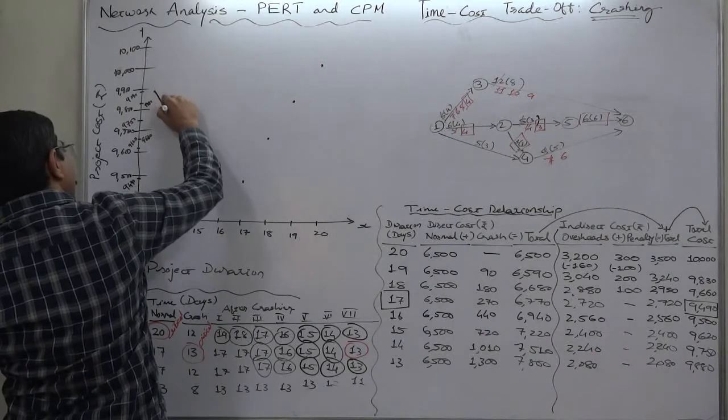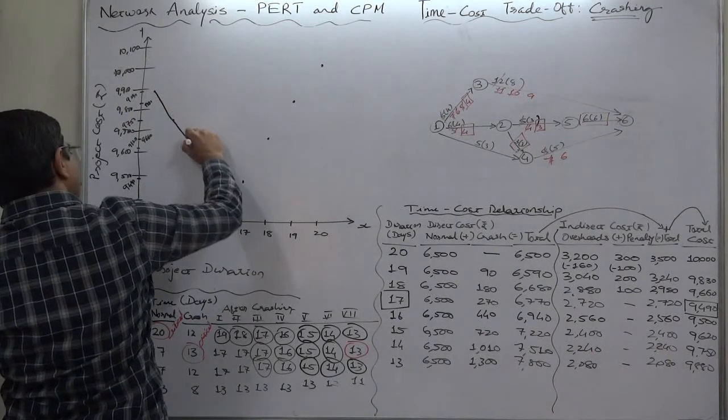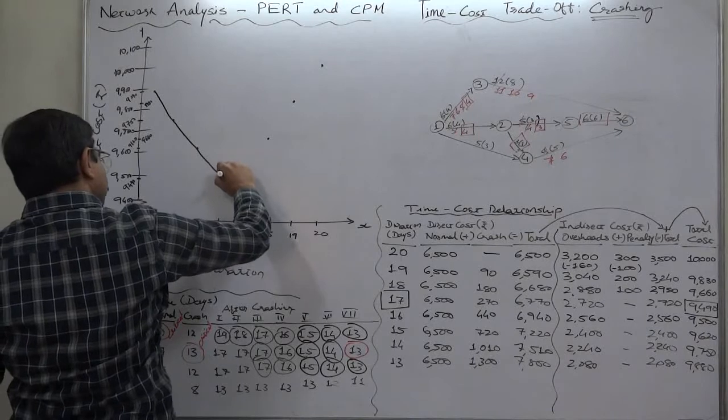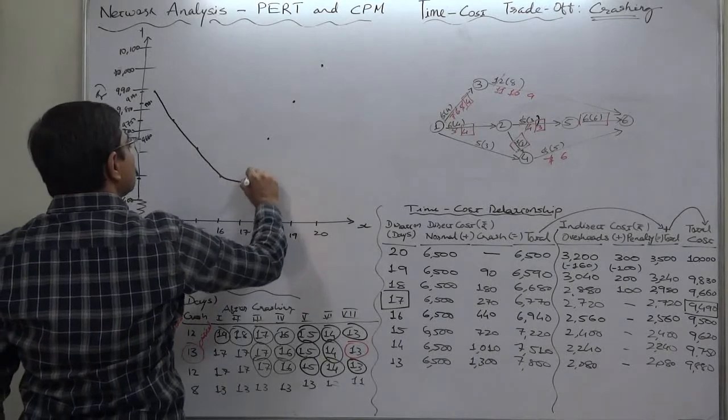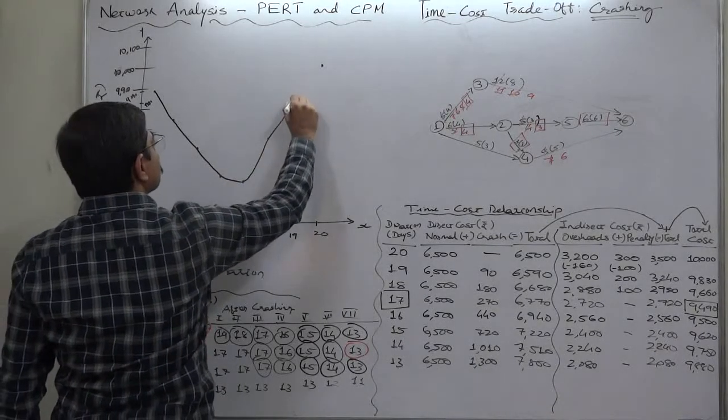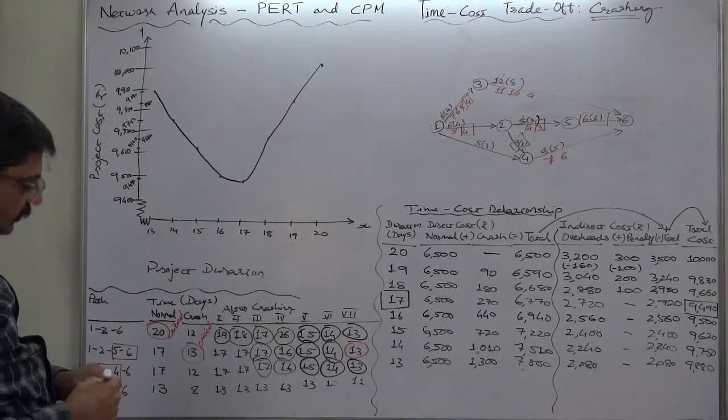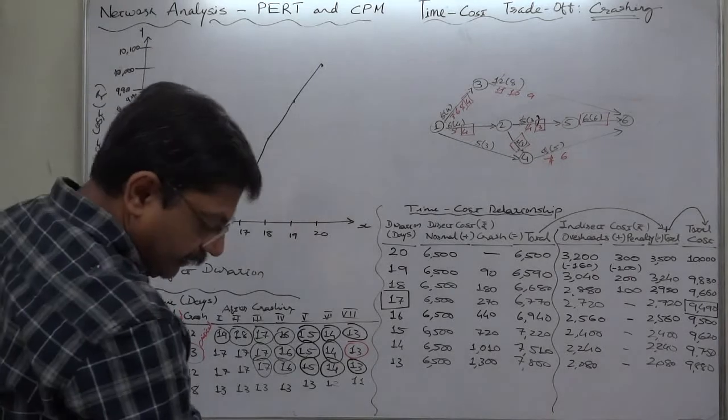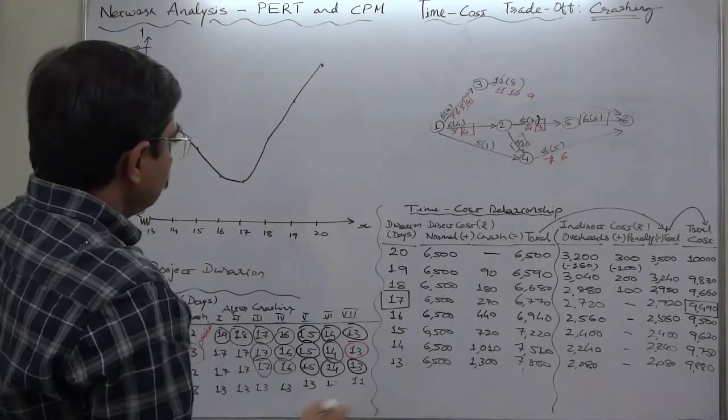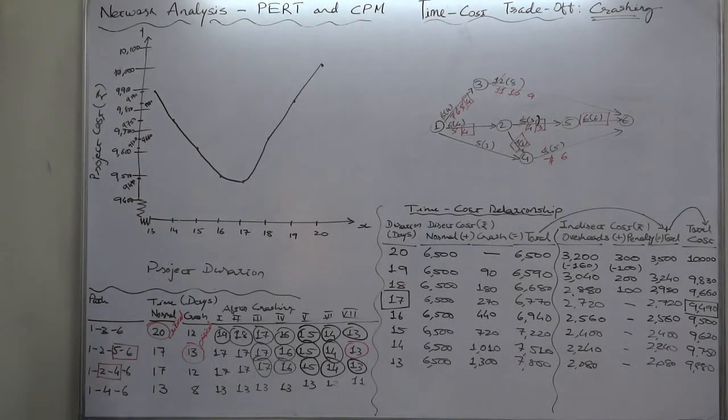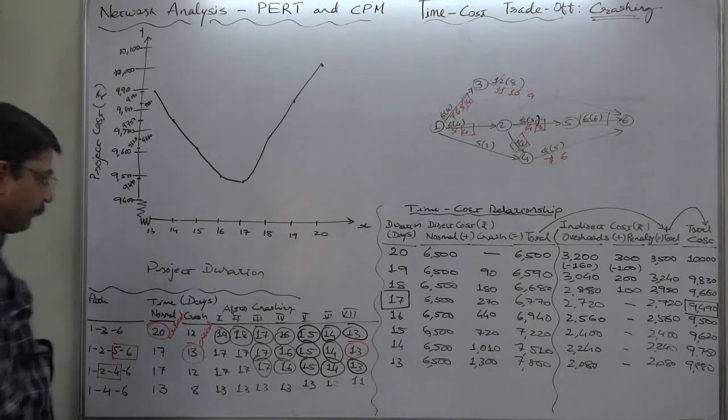Let's connect the points and try to have a curve. This is the curve showing the relationship between duration of the project and project cost, that means time cost relationship.